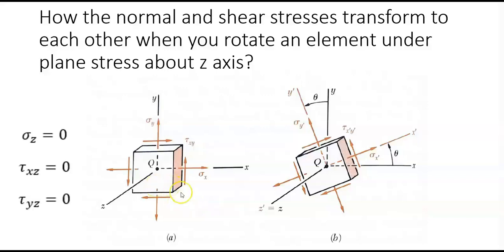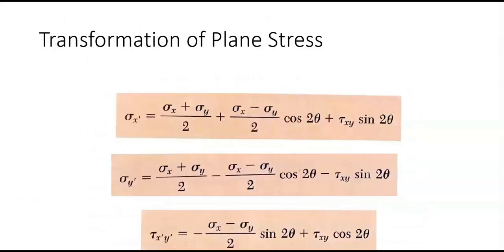What if we rotate this element about the z-axis by theta, and then we want to calculate the components of stress with respect to this rotated coordinate system — x prime, y prime, z prime? We have these three transformation equations for plane stress. If we rotate the element for theta about the z-axis, then we have sigma x, sigma y, and tau xy that we can plug into these three equations and calculate the three stress components with respect to the rotated coordinate system.